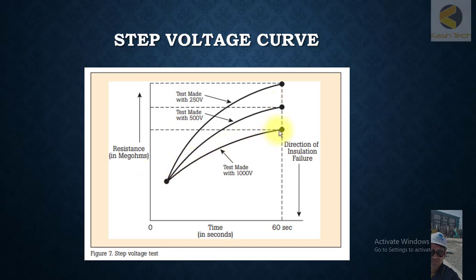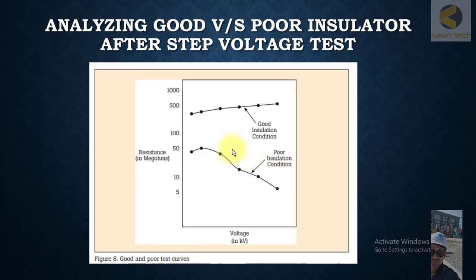The direction of insulation failure is downwards. As you increase the voltages, the mega ohms are slightly coming down. You have to basically plot the resistance in mega ohms with respect to kVs.